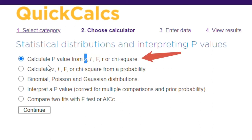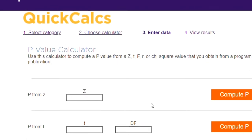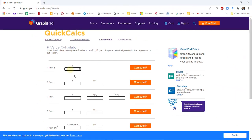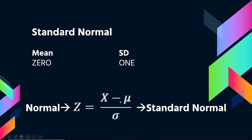If you have a Z-score, you can get a P-value. Similarly, if you have a probability value, you can get a Z-score from it. So if I know a Z-score, I can type it in and compute the P-value. We can get the Z-score using the equation we just learned: take the score, subtract the mean, and divide by the standard deviation.